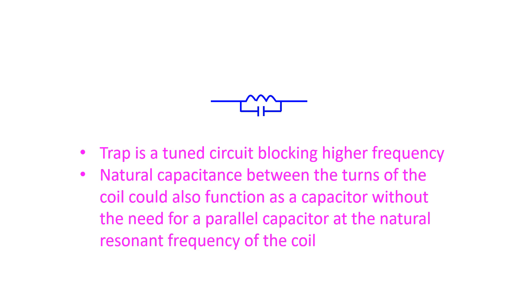In short, a trap functions as an open circuit at the higher frequency and a closed circuit at lower frequency. So, the initial part of the antenna works for the higher band and full antenna functions for the lower band. Coils can function as traps only at their self-resonant frequency.